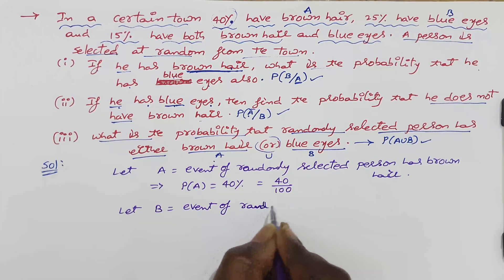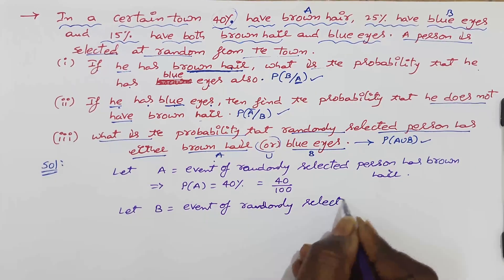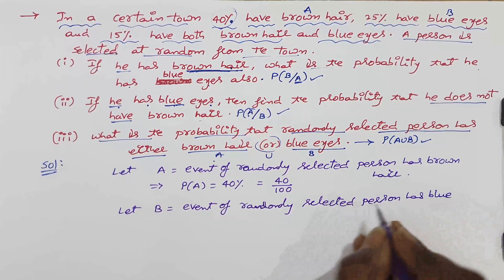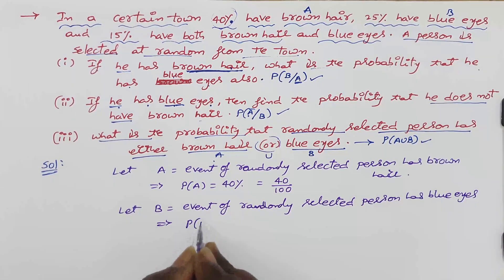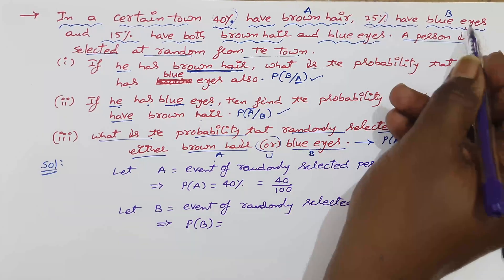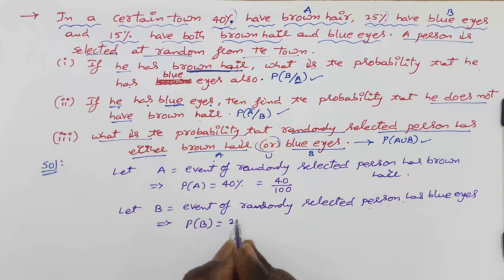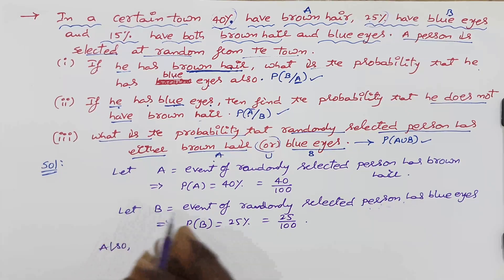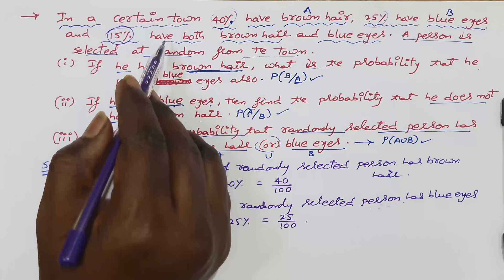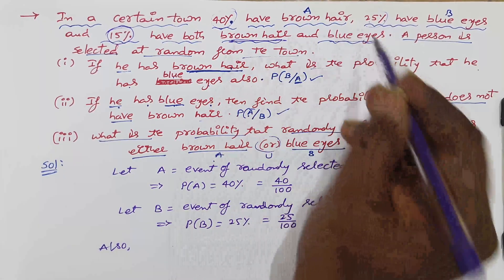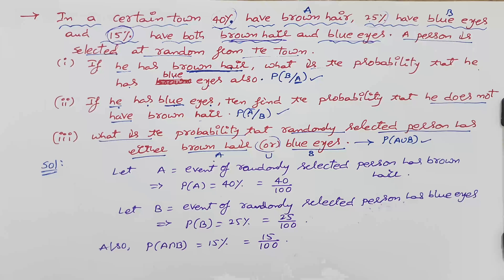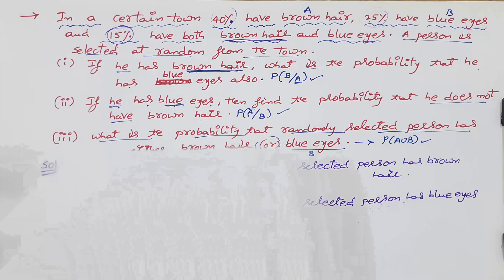The probability of B is 25 percent, so P(B) = 25/100. Also, according to the statement, 15 percent have both brown hair and blue eyes — 'both' means intersection — so P(A∩B) = 15/100. This is all the given data.